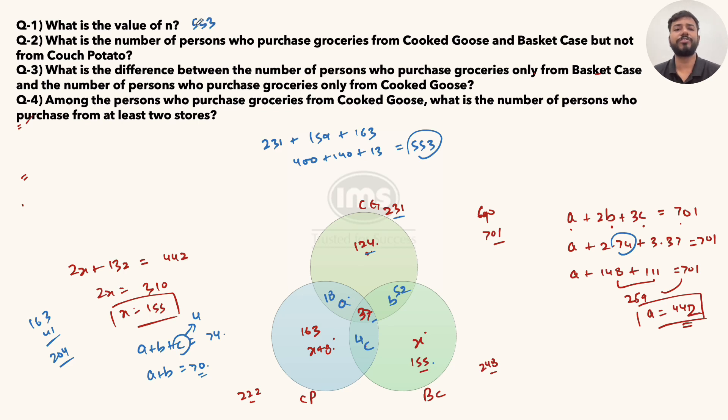Now the second problem: What is the number of persons who purchase groceries from Cooked Goose and Basket Case but not from Couch Potato? CG and BC but not Couch Potato. Hence 52 is our required answer.